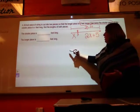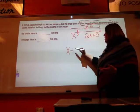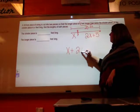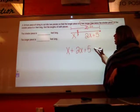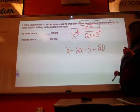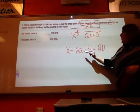So my equation would be x, short piece, plus long piece, 2x plus 5, equals the whole thing, which is going to be 20 feet. Now I can simply just solve my equation.